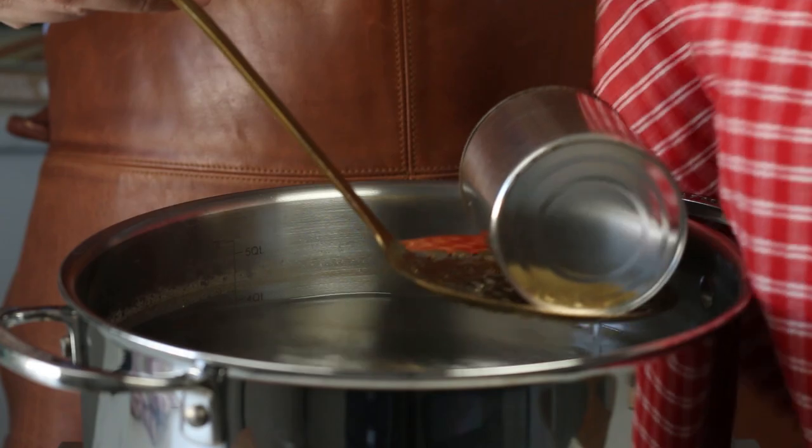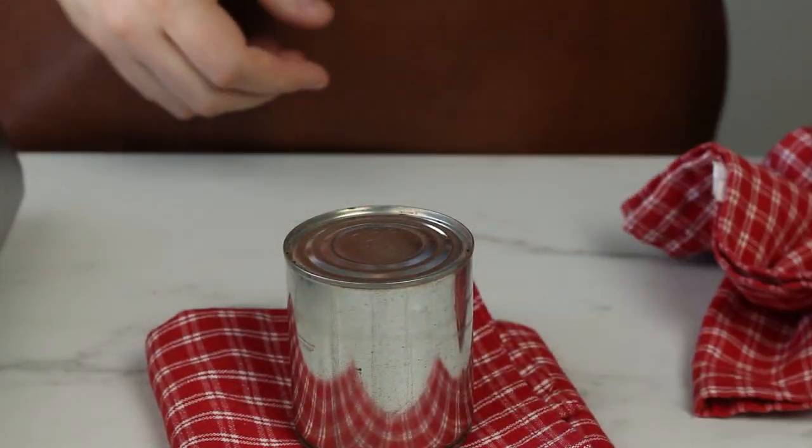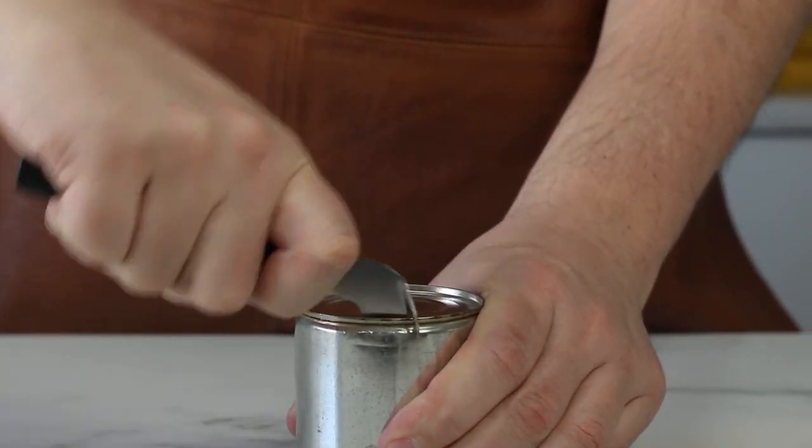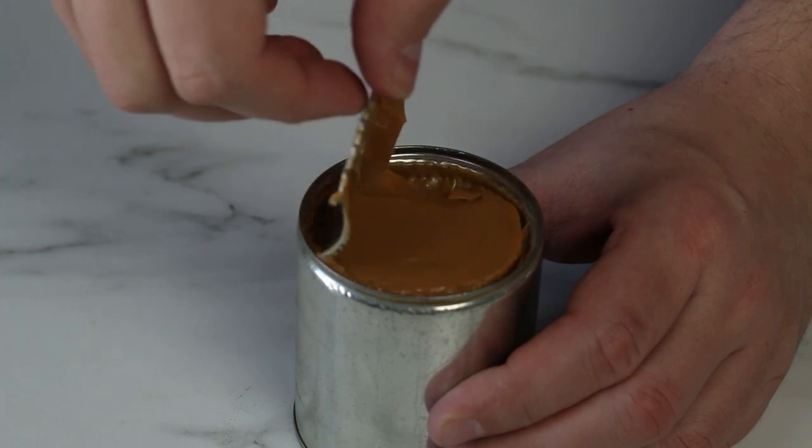So four hours later you can take it out and place it on the countertop and let it cool to room temperature as the can has built up extensive pressure inside from the boiling. So leave it alone until it cools down to room temperature.